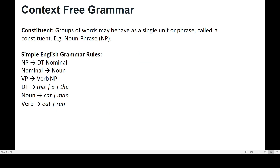The next thing is constituents. When a group of words acts as a single unit, it is called a constituent, like a noun phrase. Here are some simple English grammar rules: a noun phrase consists of a determiner (DT) and a nominal. A nominal can be a noun. A verb phrase consists of a verb and a noun phrase, and can be things like 'eat' or 'run'.